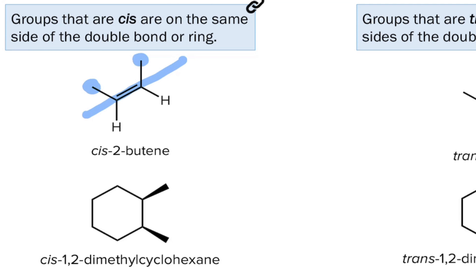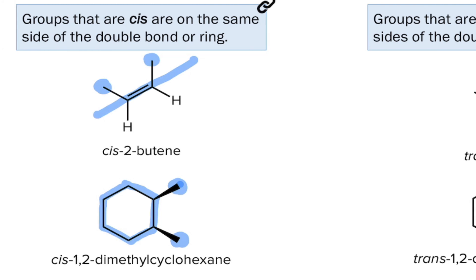We can also apply the term cis to rings. This cyclohexane, for example, contains a natural plane if we think about the average of the two chair forms, and both methyl groups are above that plane. They're on the same side of the plane of the cyclohexane ring. This is a cis isomer.